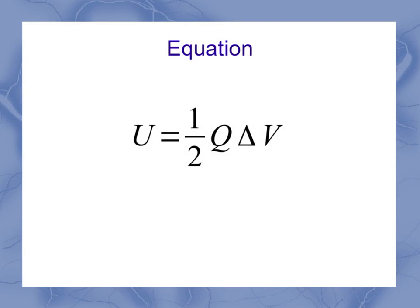So our equation for the energy in a capacitor ends up being this one, where U is the energy, Q is the charge, and delta V is the voltage.